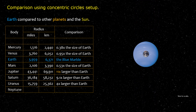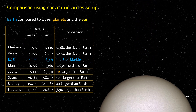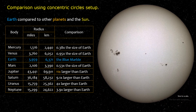Neptune is 3.9 times larger than Earth. The Sun is 109 times larger than Earth.